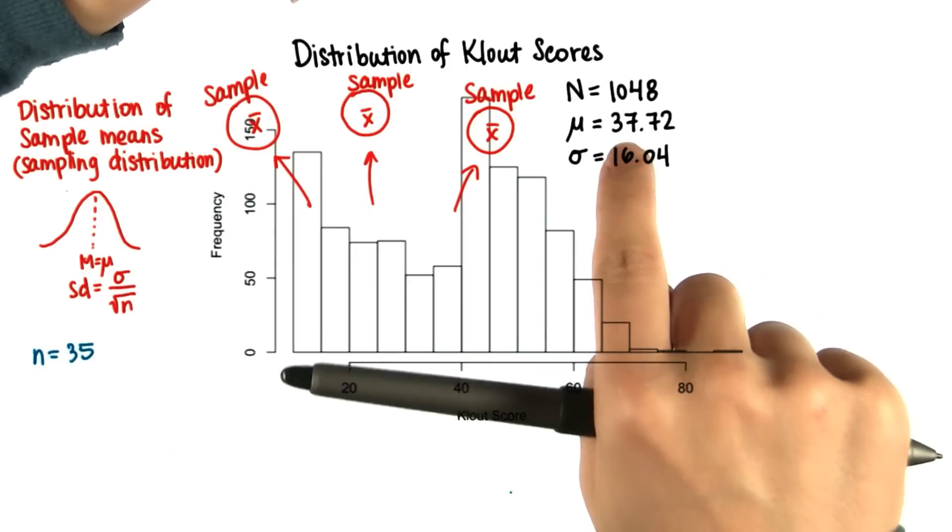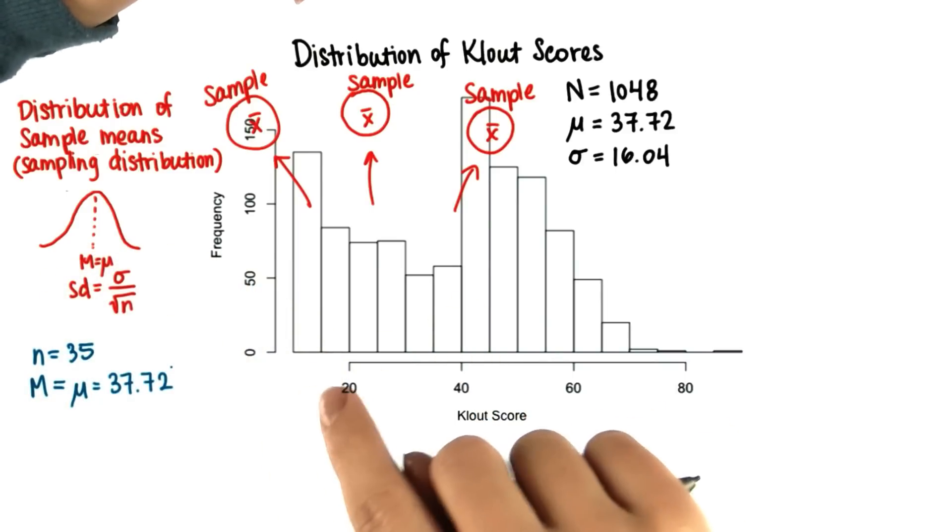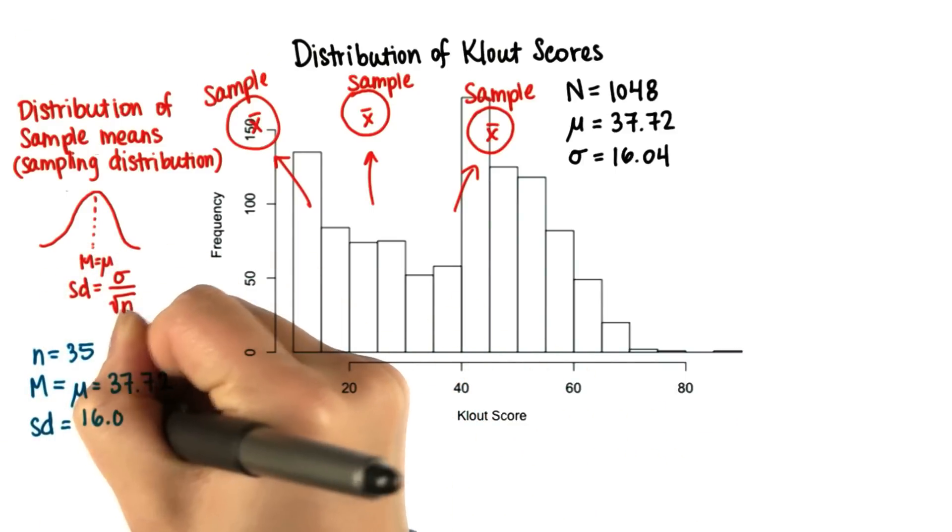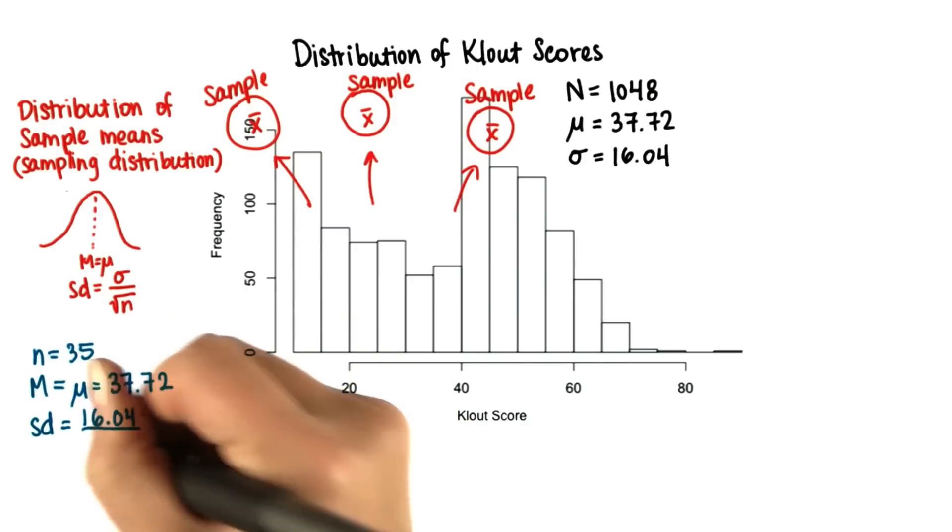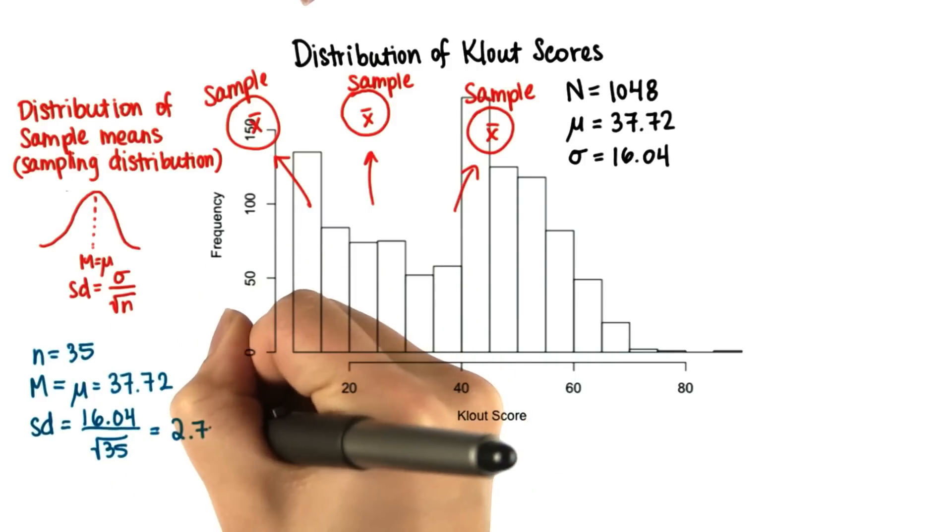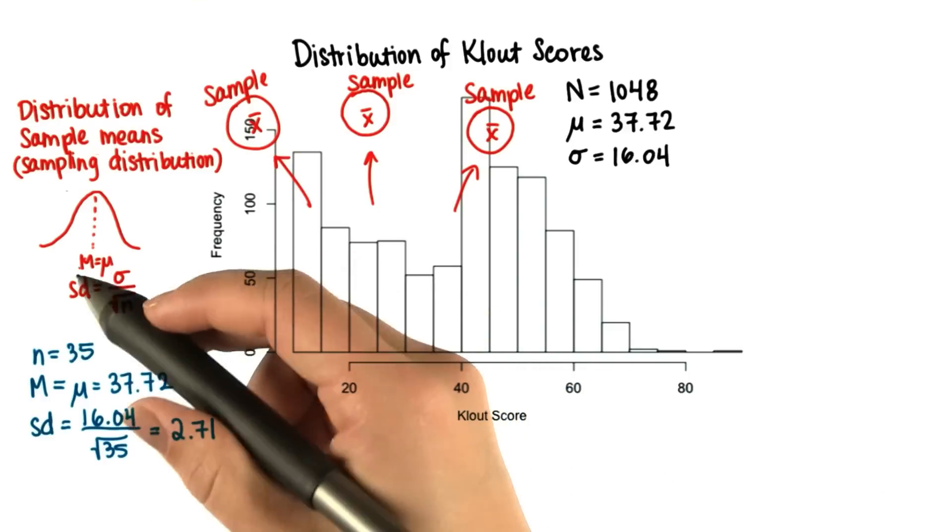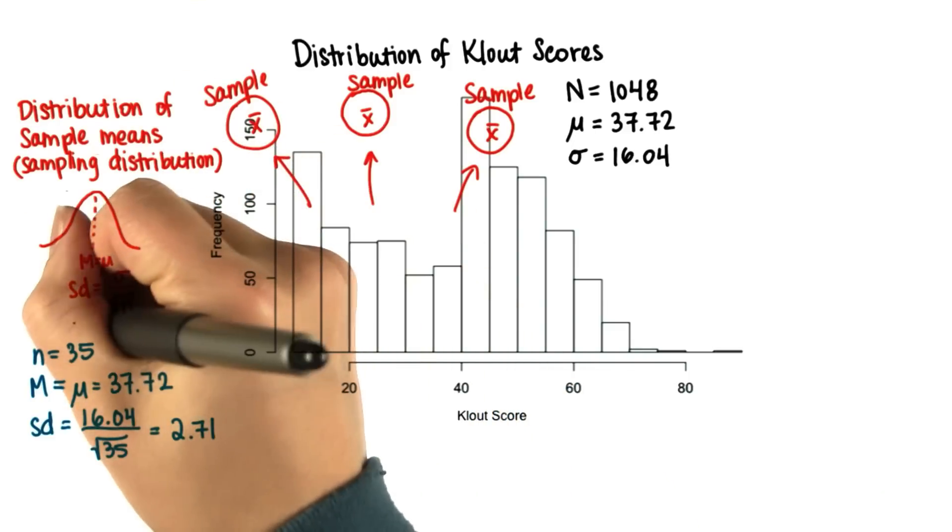The mean of the means will be the same as the population mean, and the standard deviation of this distribution is the population standard deviation divided by the square root of 35, which came out to about 2.71. Remember also that the standard deviation of the sampling distribution is called the standard error.